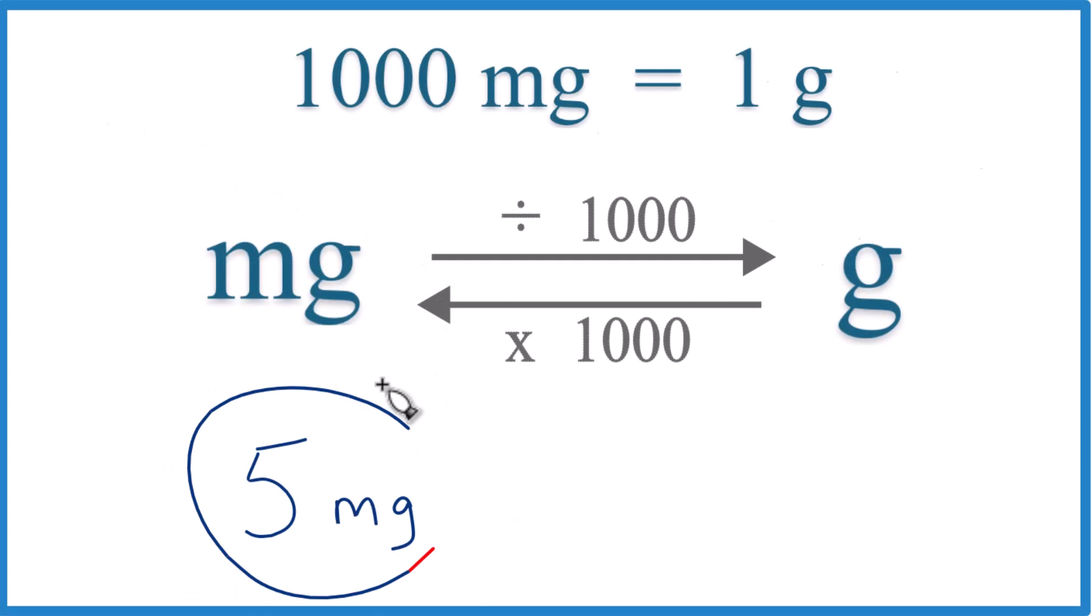So let's convert 5 milligrams to grams, and here's how you can do that. You need to know that 1,000 milligrams equals 1 gram. There's 1,000 milligrams in 1 gram. That's our conversion factor.